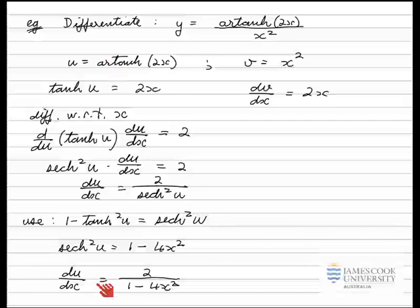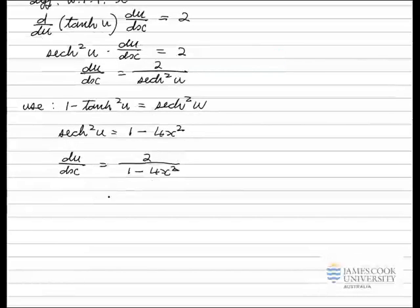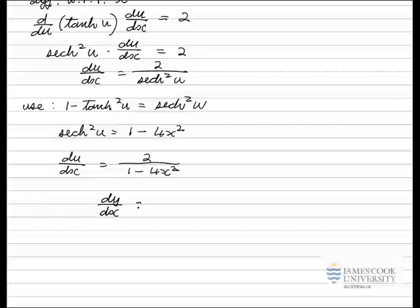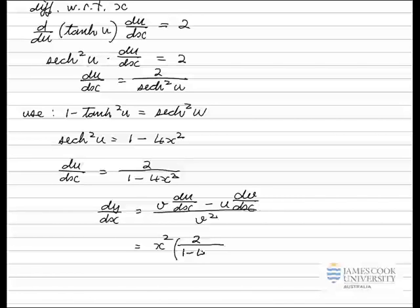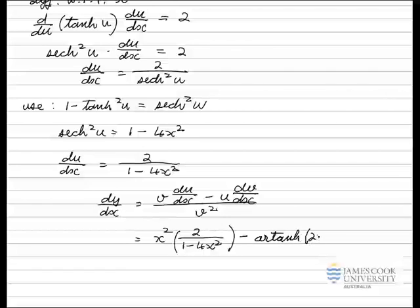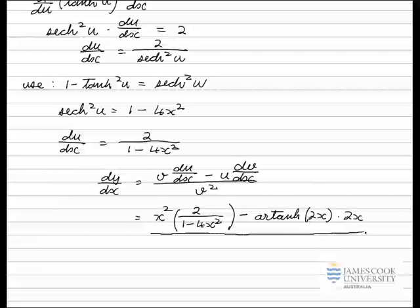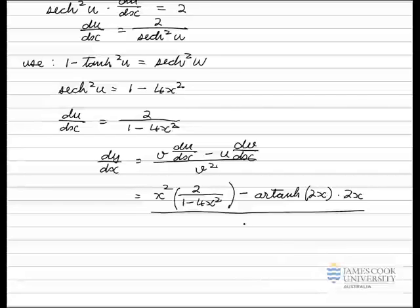Now we have u, du/dx, v, and dv/dx — they all go together in the quotient rule. The derivative dy/dx equals v·(du/dx) minus u·(dv/dx), all divided by v squared. Substituting in: v = x² multiplied by du/dx = 2/(1 − 4x²), minus u = artanh(2x) multiplied by dv/dx = 2x, all divided by v² = x⁴.